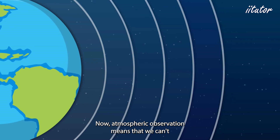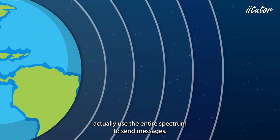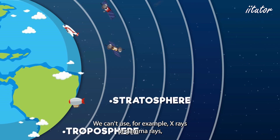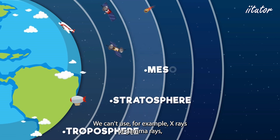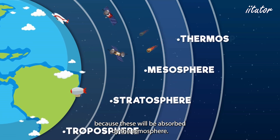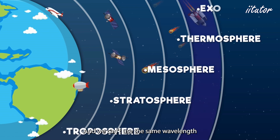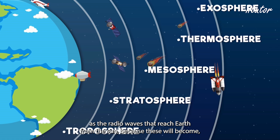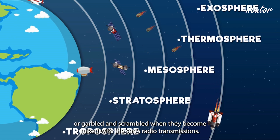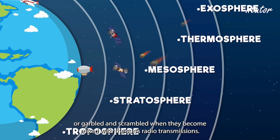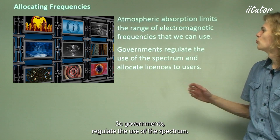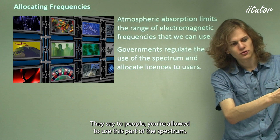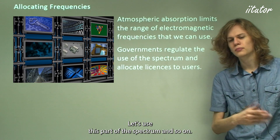Atmospheric absorption means that we can't use the entire spectrum to send messages. We can't use x-rays or gamma rays because these are absorbed by the atmosphere, and we can't use the same wavelengths as radio waves that reach Earth from the sun, because these become garbled and scrambled when mixed with the sun's radio transmissions. So governments regulate the use of the spectrum, allocating which parts different users are allowed to use.